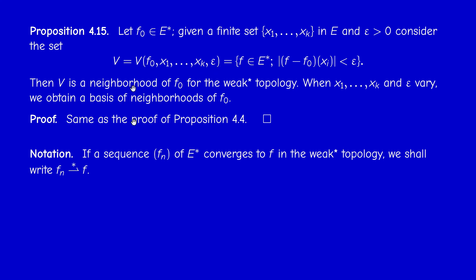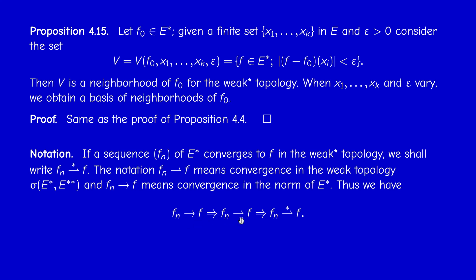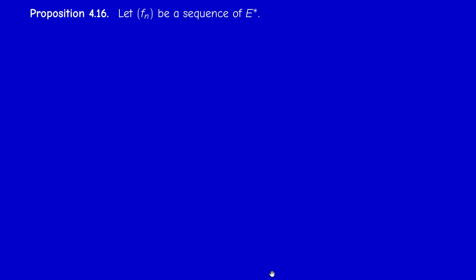Since E* has three interesting topologies, we have three kinds of convergence: strong convergence (in the operator norm), weak convergence (from the previous section), and weak-star convergence, denoted by the half-arrow with a star. Since the weak-star topology is contained in the weak topology, which is contained in the norm topology, we have: strong convergence implies weak convergence implies weak-star convergence.